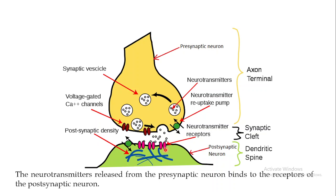The receptors on the postsynaptic neuron are sodium ion channels. When the neurotransmitter — the ligand — binds to these sodium ion channels, they open and sodium moves from the exterior into the interior of the postsynaptic neuron, allowing the propagation of an action potential in the postsynaptic neuron. This is another clear example of a ligand-gated ion channel. In the next video, I will focus on voltage-gated ion channels with important examples.